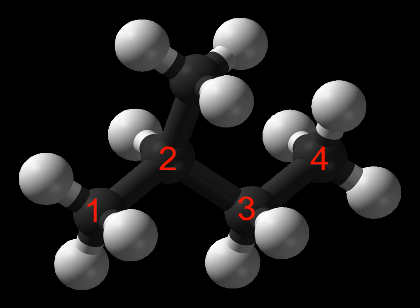Alkanes with more than three carbon atoms can be arranged in various different ways, forming structural isomers. The simplest isomer of an alkane is the one in which the carbon atoms are arranged in a single chain with no branches. This isomer is sometimes called the n-isomer, although it is not necessarily the most common. However, the chain of carbon atoms may also be branched at one or more points.